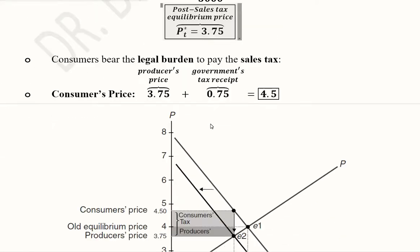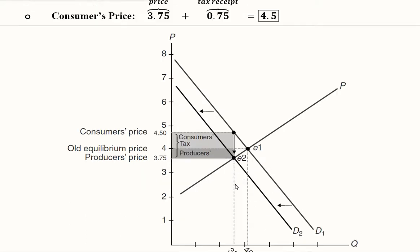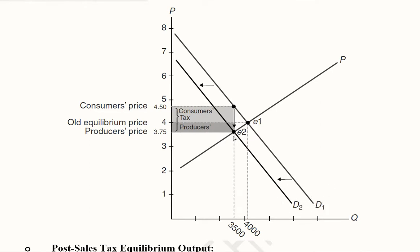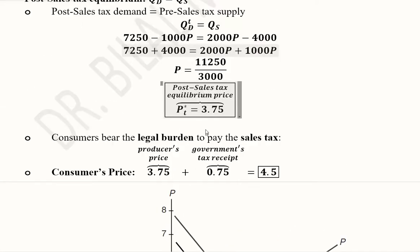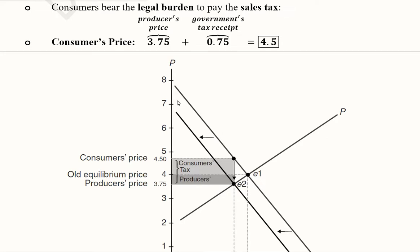The diagrammatical depiction shows the first equilibrium E1 and, due to the shift from D1 to D2, we get a new equilibrium E2. Previously the price was 4, now it is 3.75. The equilibrium output was 4000 and now it will be 3500, which can be calculated by substituting this price into either the post-sales demand function or the pre-sales supply function — this is a small DIY exercise you can do yourself.